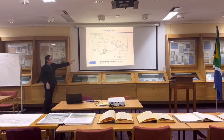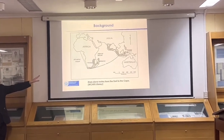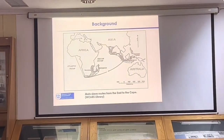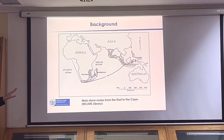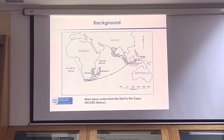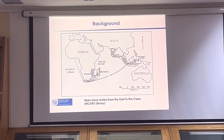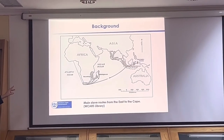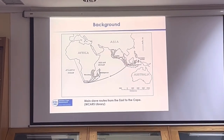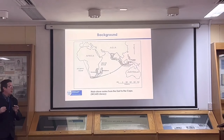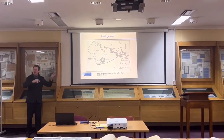Here you can see the routes of the main slave routes from the East to the Cape — from the East Indies Islands, and also from Madagascar and from India and Ceylon. There was a huge number of slaves that came from those areas.